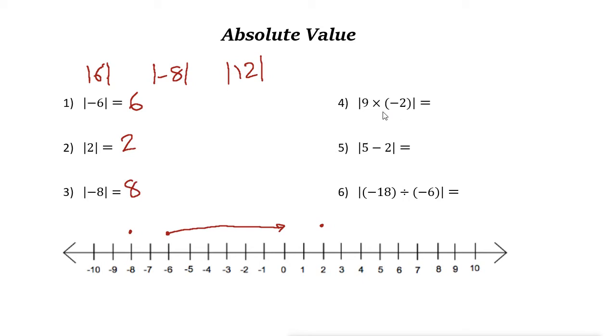Absolute value of these two. When you have absolute value and you have some operations, then follow the order of operations rule. Here we have nine times negative two, and we know that nine times negative two is just negative 18. So absolute value of negative 18 is just 18.